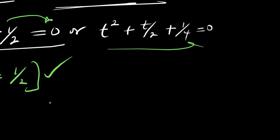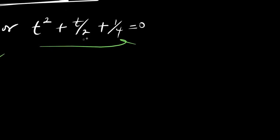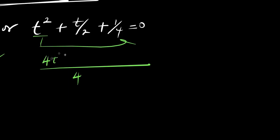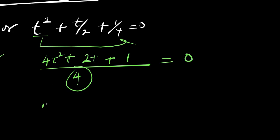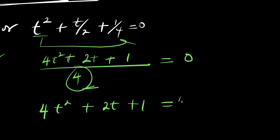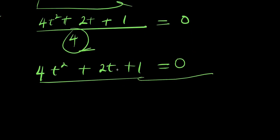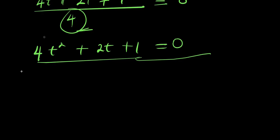Now let's solve the quadratic to find the other solutions. Before we use the formula method, we need to make sure the denominators are the same. The common LCM is 4. Multiplying through by 4: 4t squared plus 2t plus 1 equals 0. So a is 4 — the coefficient of t squared — b is 2 — the coefficient of t — and c is 1, the constant.